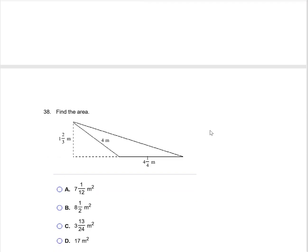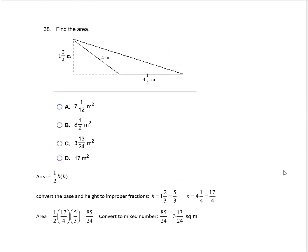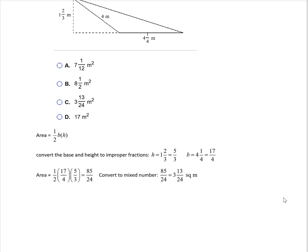Find the area of the triangle. The area of a triangle is one-half base times height. I convert the mixed number measurements to improper fractions: 1 and 2 thirds becomes 5 thirds, and 4 and 1 quarter becomes 17 fourths. Putting those into the area formula and multiplying gives 85 over 24. Converting back to a mixed number by dividing 24 into 85 gives 3 and 13 twenty-fourths, which is answer C. The units are square meters.